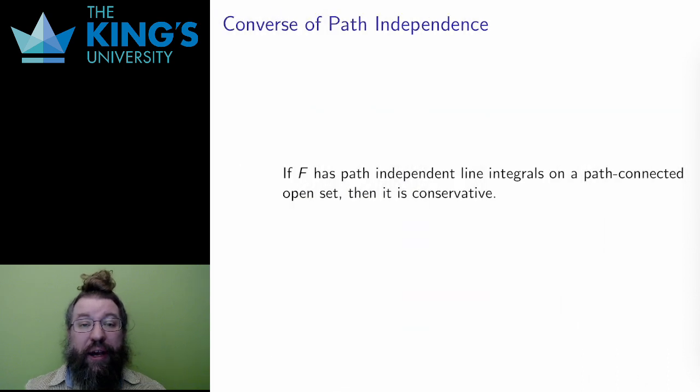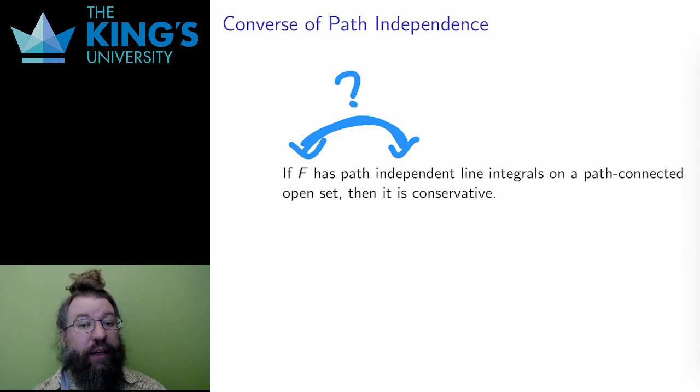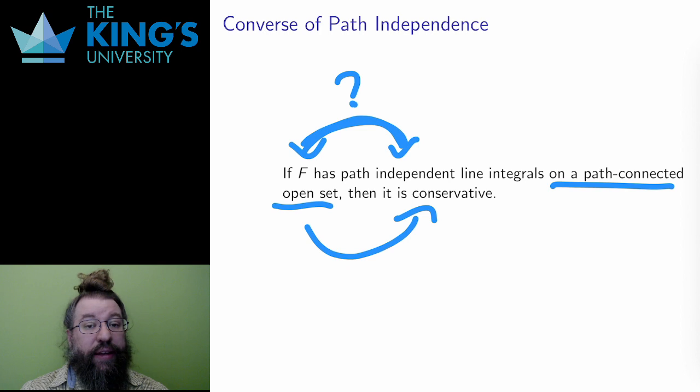Let me finish with some finer details of these properties of conservative vector fields. Conservative vector fields are path independent, but is the converse true? Well, like with gradients and curls, I need a condition. If a field is path independent on a path-connected open set, that topology definition I did earlier this week, then it is conservative. So conservative and path independence are almost exactly equivalent, they are equivalent as long as the domain is a single piece, a path-connected set.